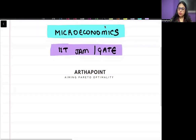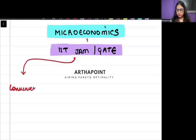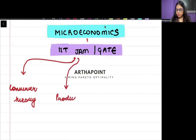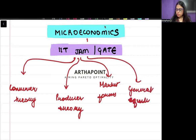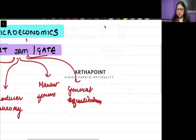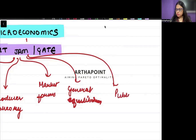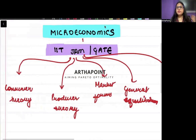When we talk about microeconomics, it can be broadly divided into five main important parts: consumer theory, producer theory, market forms, general equilibrium, and public economics. These are the five main important parts that define the entire subject of microeconomics.